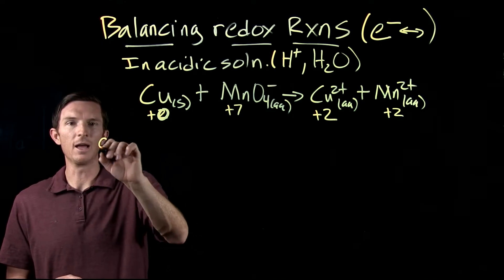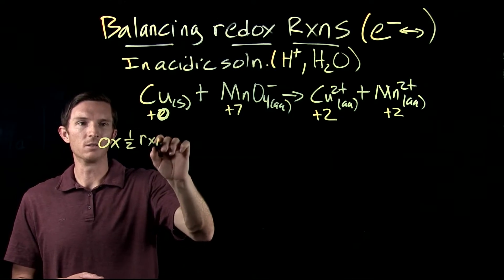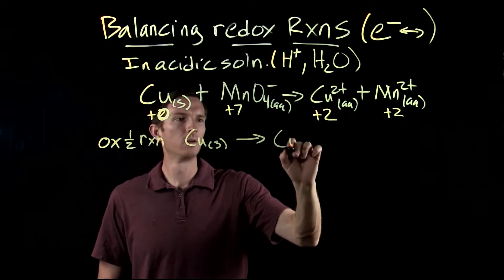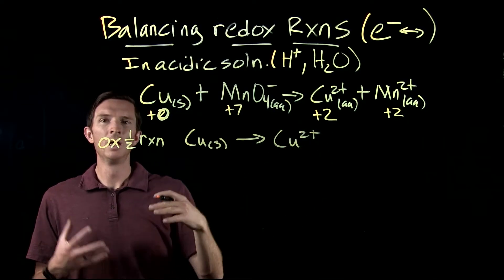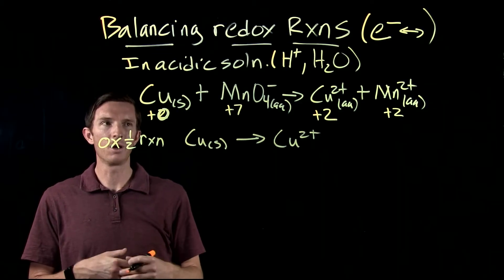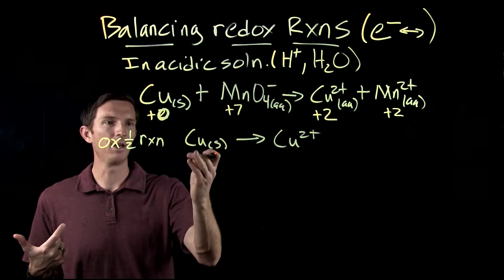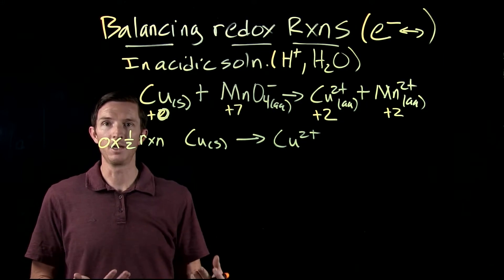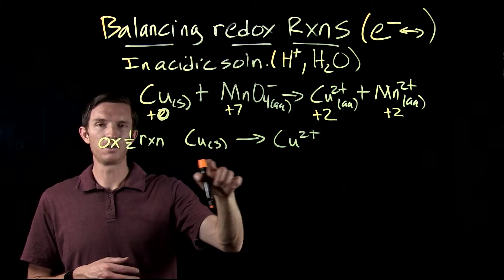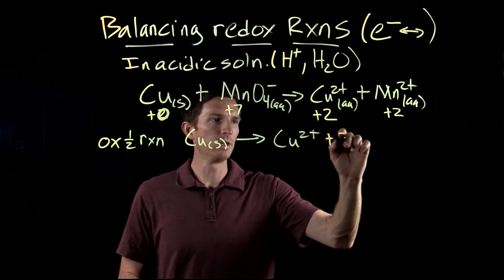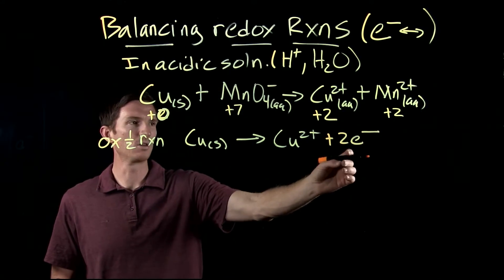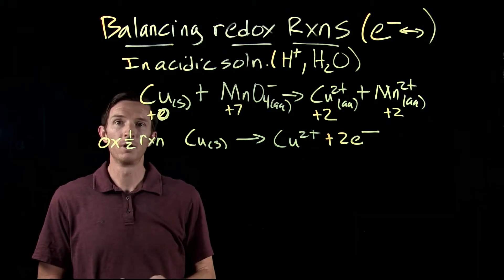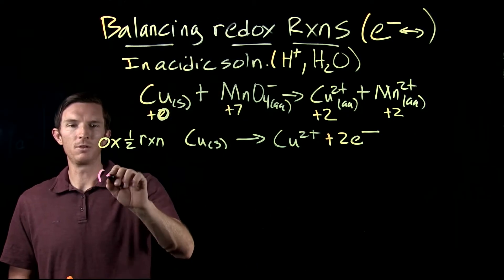For the oxidation half reaction, copper is being oxidized: Cu → Cu²⁺. We first balance for every atom other than hydrogen and oxygen — copper is already balanced. Then we balance the charge by adding electrons. This side has a charge of zero, the product side is plus two, so we add two electrons to the product side: zero equals negative two plus positive two. The oxidation half reaction is now balanced for both charge and mass.